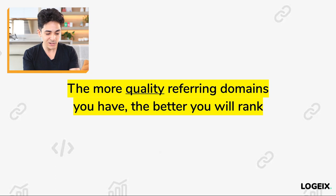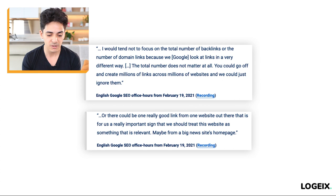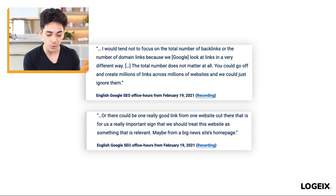Quality of referring domains is a very important aspect. To quote John Mueller from Google: 'I would tend not to focus on the total number of backlinks or the number of domain links, because we look at links in a very different way. The total number does not matter. You could go off and create millions of links across millions of websites and we could just ignore them, or there could be one really good link from one website that is a really important sign — maybe from a big news site's homepage.' I don't take everything Google says as gospel, but I wholeheartedly agree: it's not just quantity. Building 10,000 spammy blog comments a day would do absolutely nothing today — if anything, it could have a negative effect.